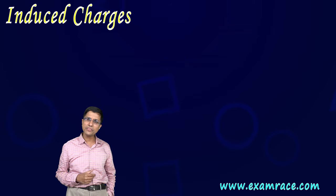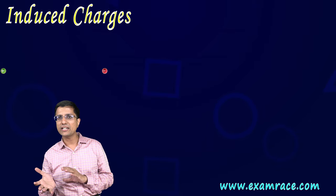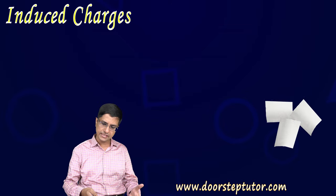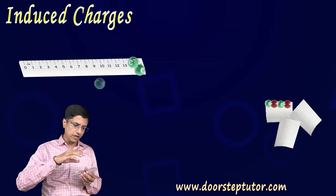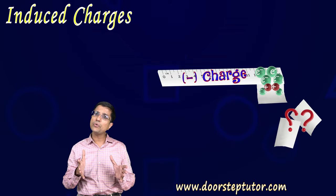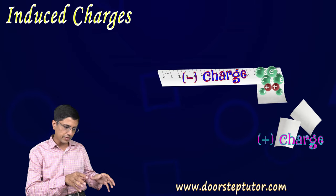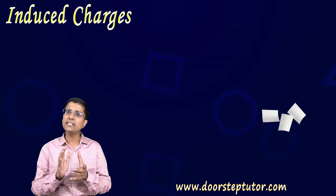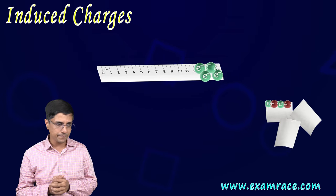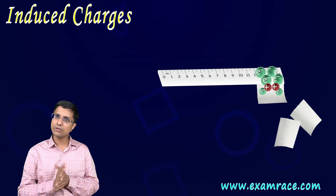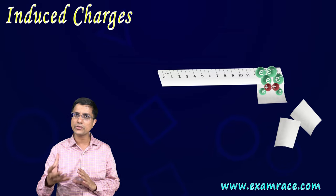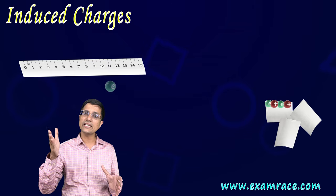Positive and negative charges attract, and negative and negative repel. When doing the scale experiment, the scale became negatively charged but I did not do anything to the paper. So where did the paper's positive charge come from to create that attraction? The answer is known as induced charges. The attraction is caused by a process of induction — specifically, the inducing of charges.